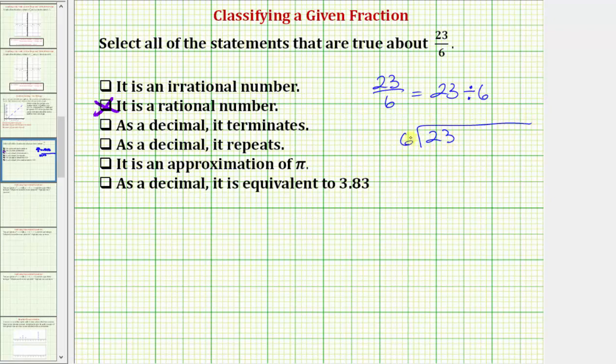We first ask how many 6's in 23, which would be 3. 3 times 6 is equal to 18, we subtract, and notice how this difference is 5, which is less than 6, which means the 3 is correct.